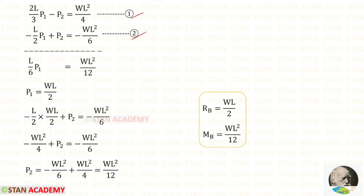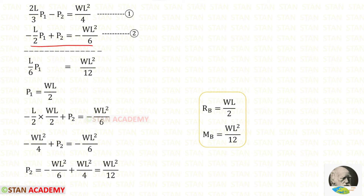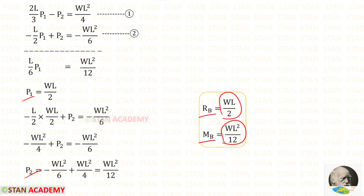Now let us add the first and second equations. We can eliminate P2. Adding the terms and simplifying by eliminating 6 and L gives us P1, which is RB equal to WL upon 2. Substituting the value of P1 into the second equation — L times L gives L², 2 times 2 gives 4 — and rearranging, we get P2 equal to MB equal to WL² upon 12.